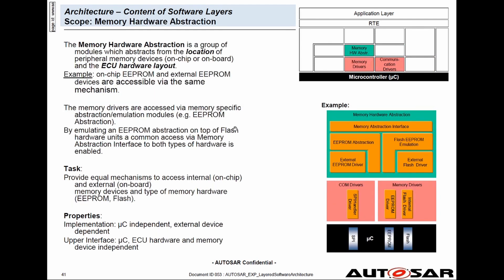Next is the memory abstraction. This abstracts the location of the memory devices, the EEPROM and flash. This layer also has a flash EEPROM emulation facility so that the flash device can be used like EEPROM.